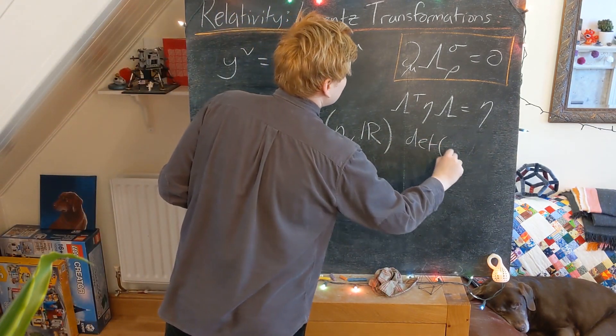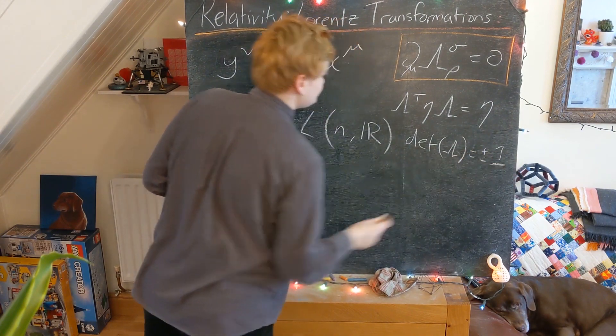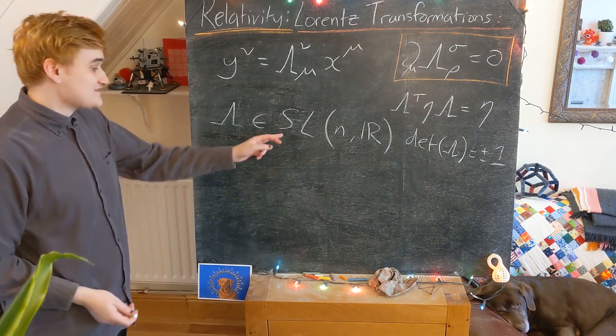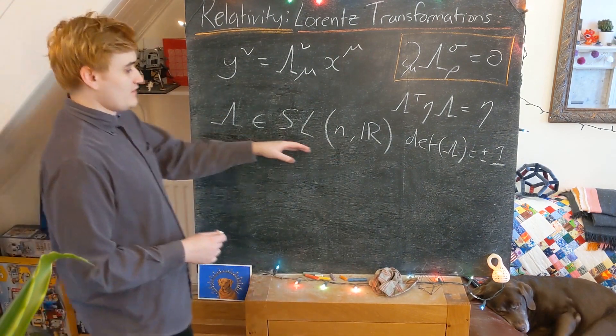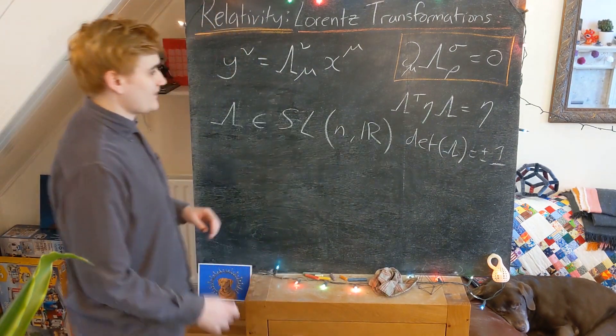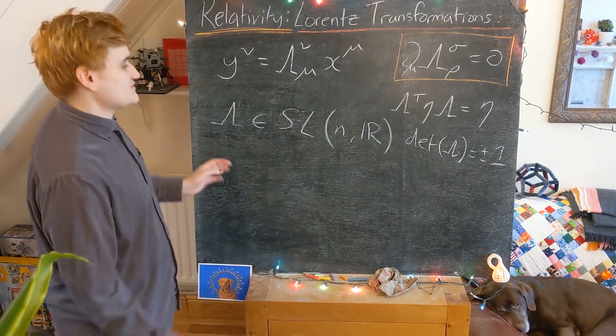So remember that we also had something like that lambda is plus or minus 1, which mainly tells us we have to look at the SL special linear group, which all have determinant plus 1. And then by looking at these properties, we're going to realize, okay, well this is, as I mentioned, some kind of pseudo-orthogonality property.